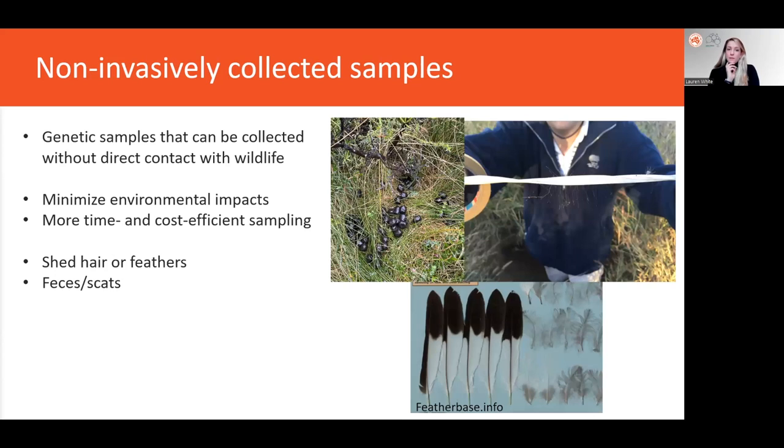Some examples of these sample types are hair or feathers, or probably the most common non-invasive sample type of feces or scats. These samples contain DNA from the individual that deposited them, which can be extracted and analyzed.